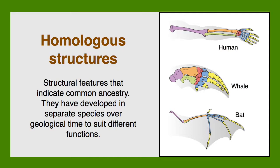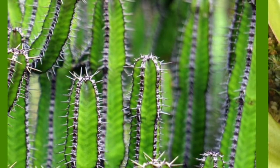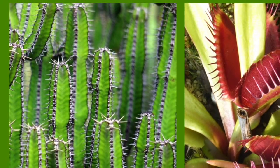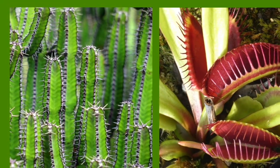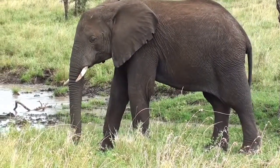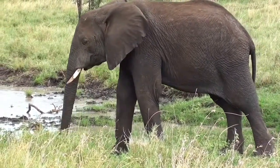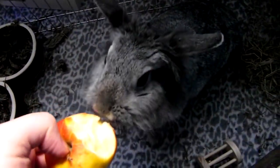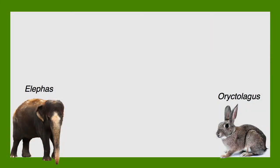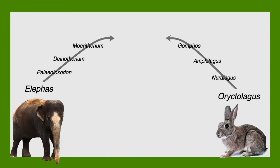Homologous structures are structural features of two organisms that indicate a common ancestry. In other words, these limbs have the same arrangement of bones because they all developed from an ancestral limb that had the same arrangement. There are plenty of other examples of homologous structures seen throughout the fossil record and in modern day organisms. The spines of a cactus and jaws of a Venus flytrap both developed from leaves on an ancestral plant that lived in the distant past. The mighty tusks of an elephant and the nipping teeth of a bunny rabbit are also very different in form and function, but are homologous structures that developed from incisor teeth of an ancestral mammal.